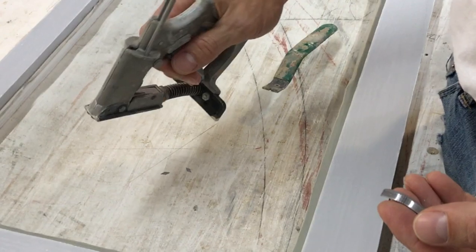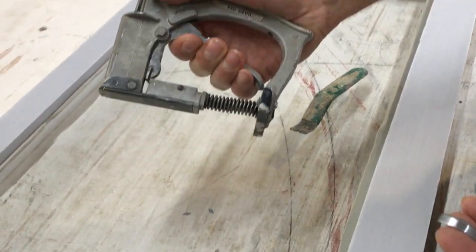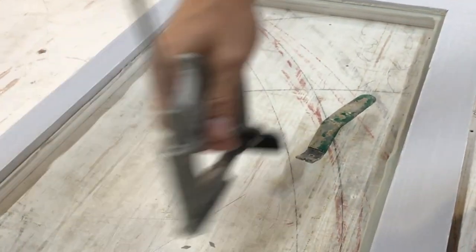All right, a lot of people have been asking me how these devices work. This is a glazing point driver. It's for bedding glass in an old wood window.